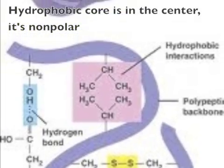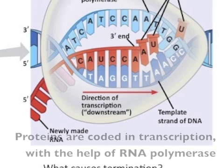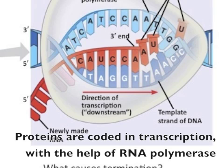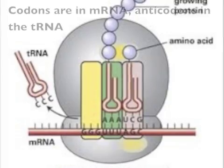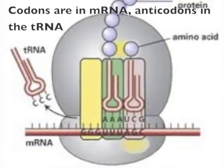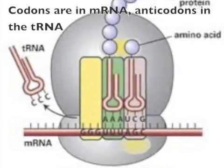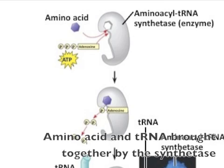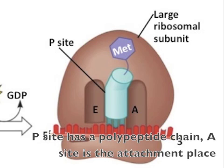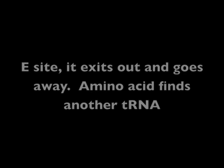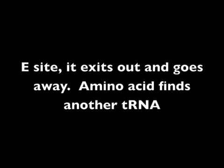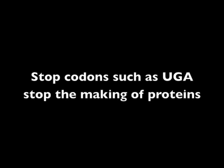Proteins are encoded in transcription with the help of RNA polymerase — codons are in the mRNA, anticodons in tRNA. Amino acids and tRNA are brought together by the synthetase. The P site has a polypeptide chain, the A site is the attachment place, the E site is where it exits out and goes away. Amino acids find another tRNA.